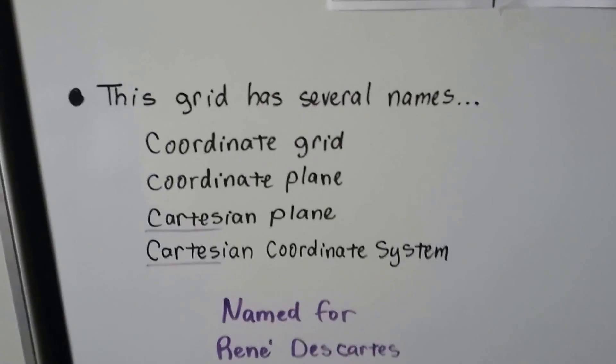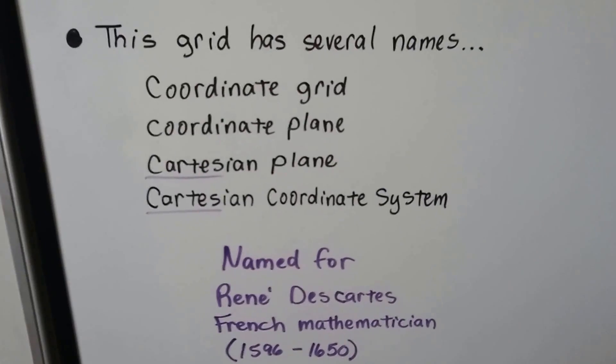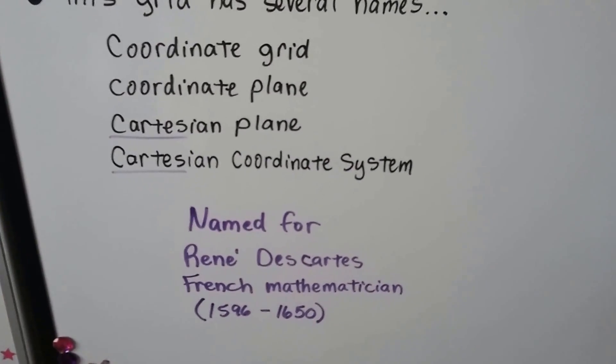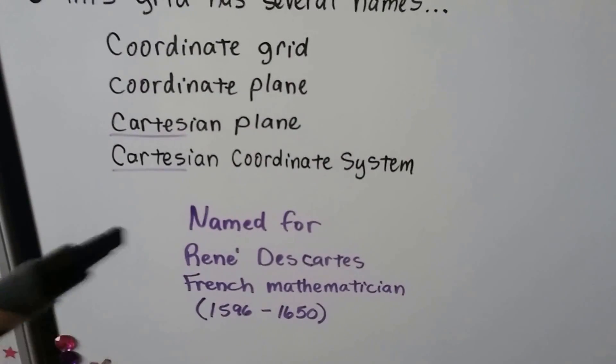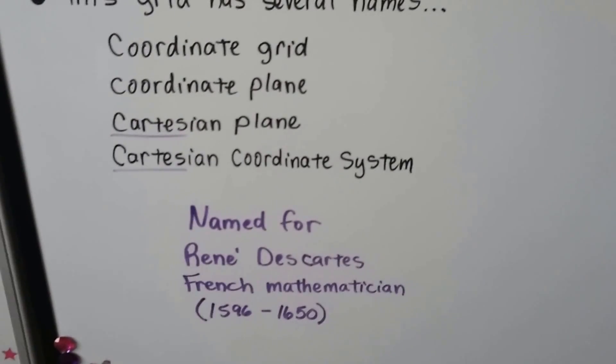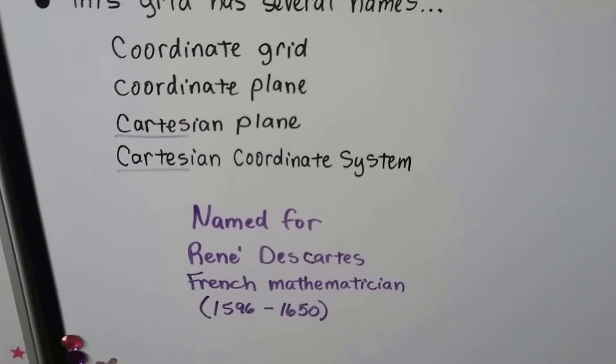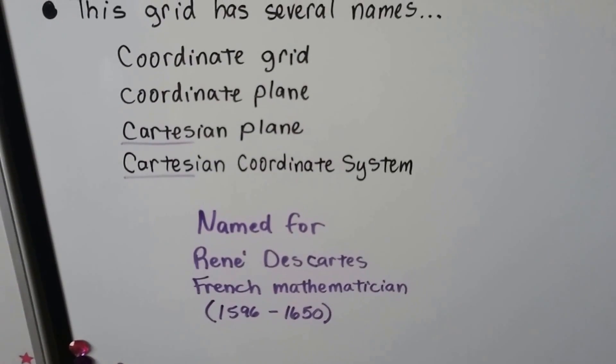This grid has several names: coordinate grid, coordinate plane, Cartesian plane, Cartesian coordinate system. It's named after René Descartes. He was a French mathematician, and I think he published it around 1637 or so.